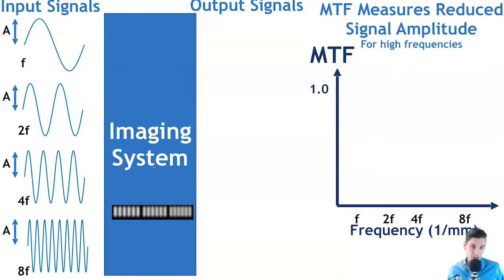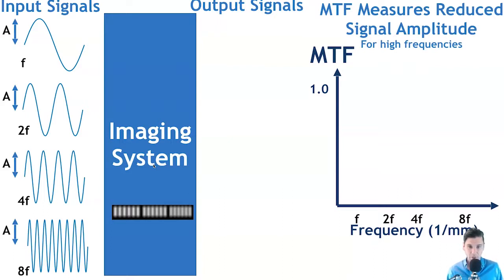We're going to go through linear systems theory to talk about how our system converts signals into the images we have. Those signals can be thought of as being made up of many different frequencies — this is what we call the Fourier transform. A lot of linear systems theory is based on the fact that we can think of our signal, or image itself, as being made up of a combination of sinusoids. Those two representations are actually equivalent.